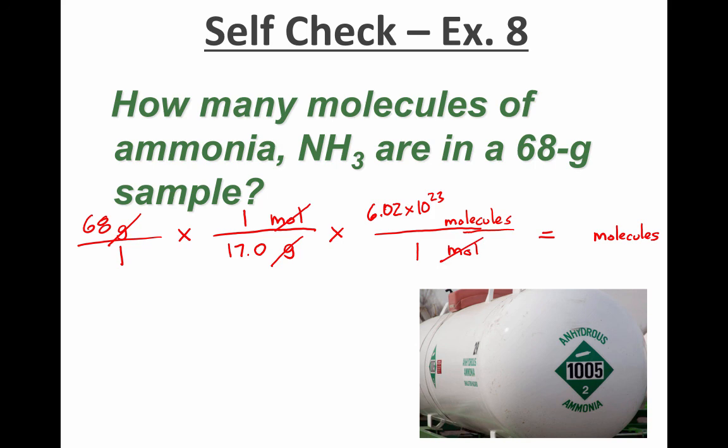And so I grab my calculator, I multiply the numerators, I divide by the denominator, and I get 2.408 times 10 to the 24th. Now notice that when I write this number down, I'm not going to keep all of the digits, because this measurement only had two significant digits. I'm going to make sure that my answer also only has two significant digits. I would write this as 2.4 times 10 to the 24th.